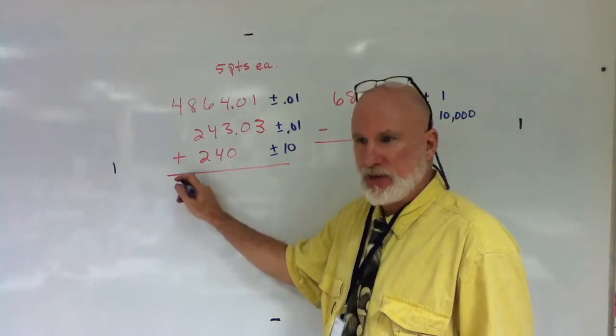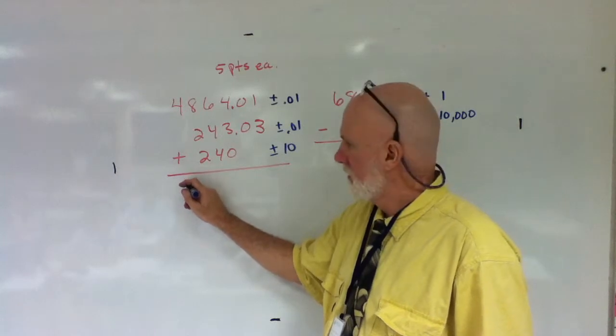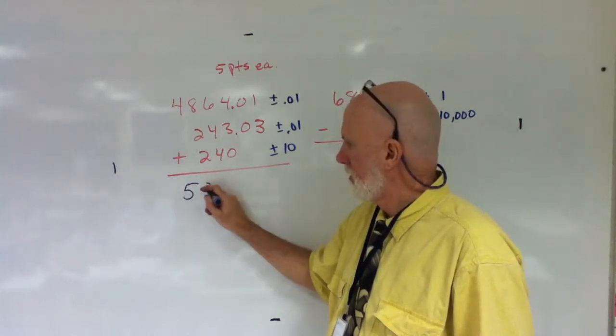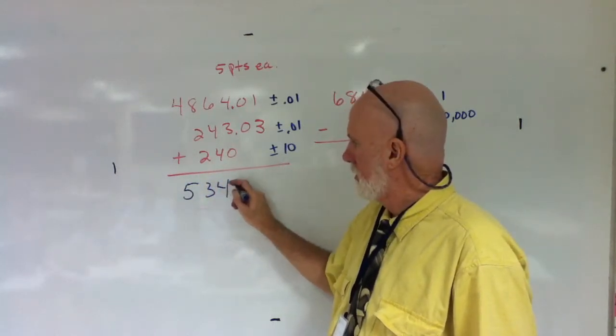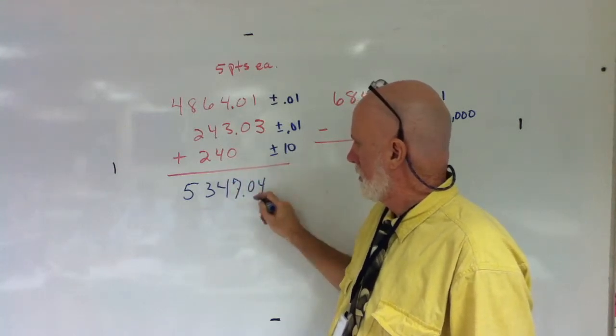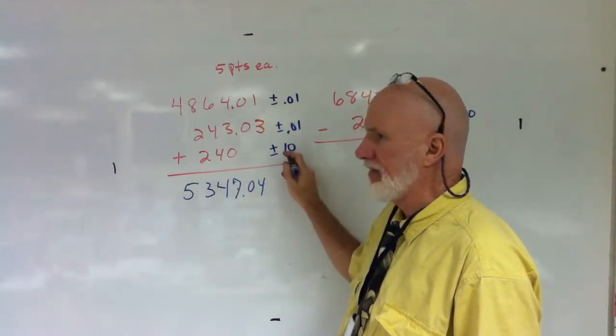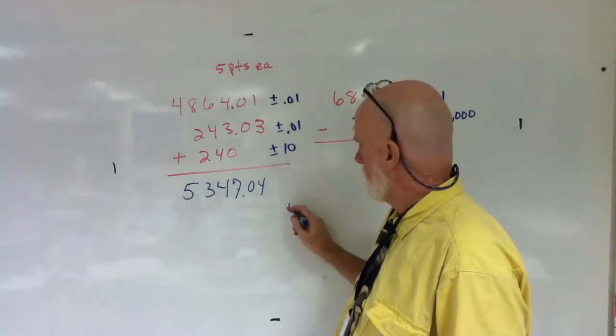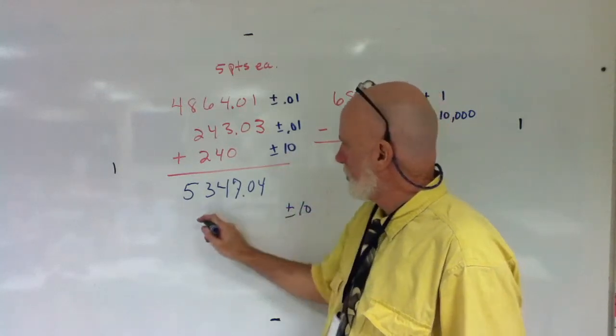Mathematically, this is what we did already, so this should be quick. Five thousand three hundred and forty-seven point zero four. So you've got to make it have that precision, plus or minus ten.